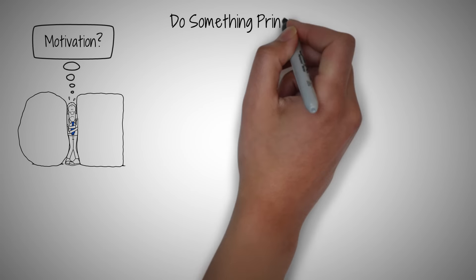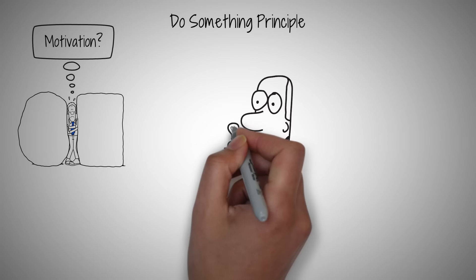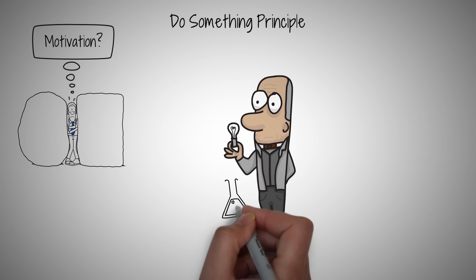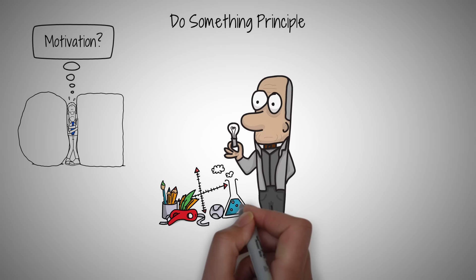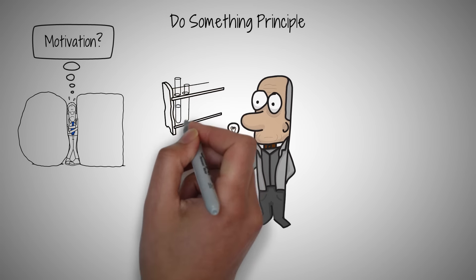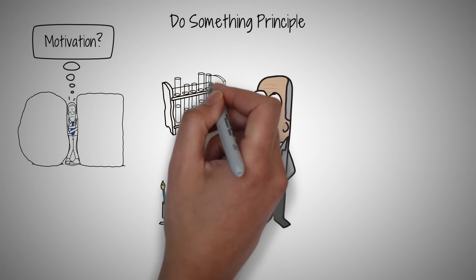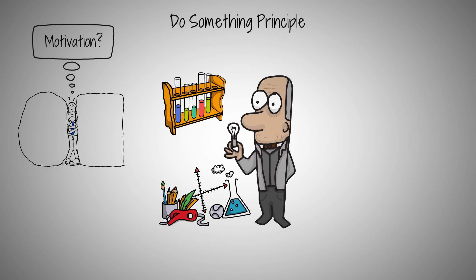Ever felt stuck, waiting for motivation to strike? This is where the do-something principle comes in, a game-changer in overcoming procrastination. Consider Thomas Edison, who didn't wait for inspiration but actively pursued his experiments, despite facing countless failures and setbacks. He never waited for the perfect idea to strike. Instead, Edison embraced the do-something principle. He continuously experimented, learned from each failure, and kept moving forward. This relentless pursuit led to revolutionary inventions like the lightbulb.